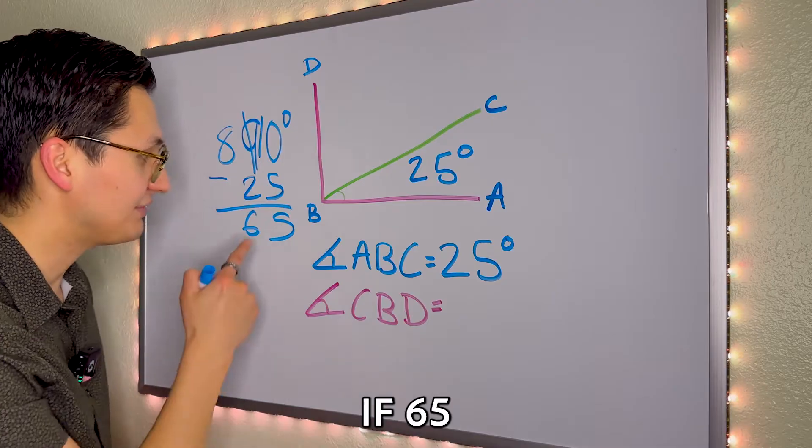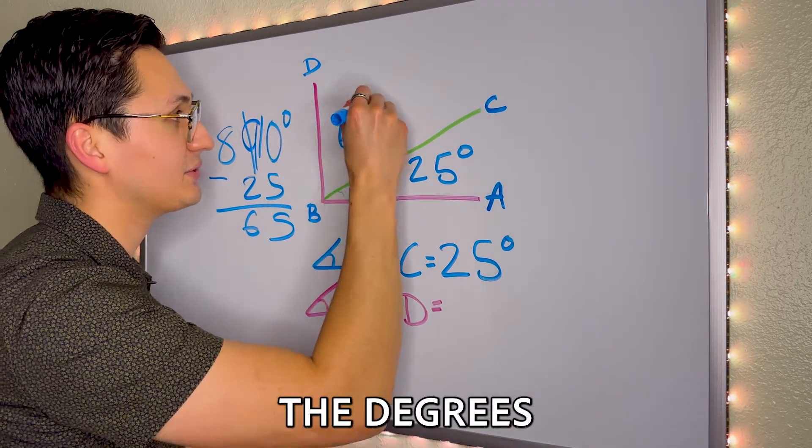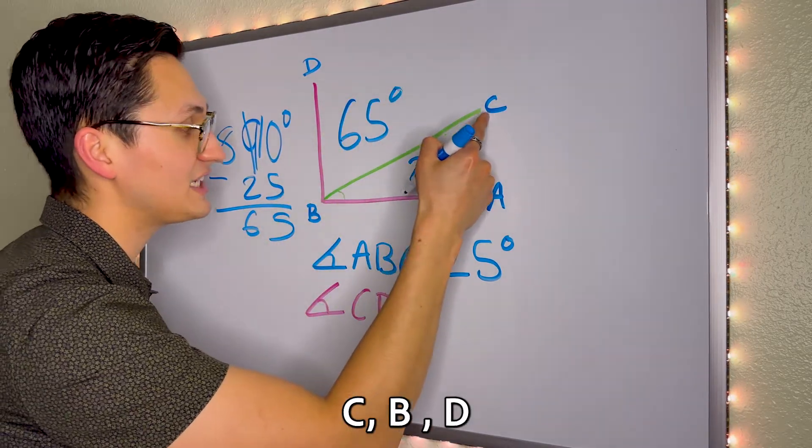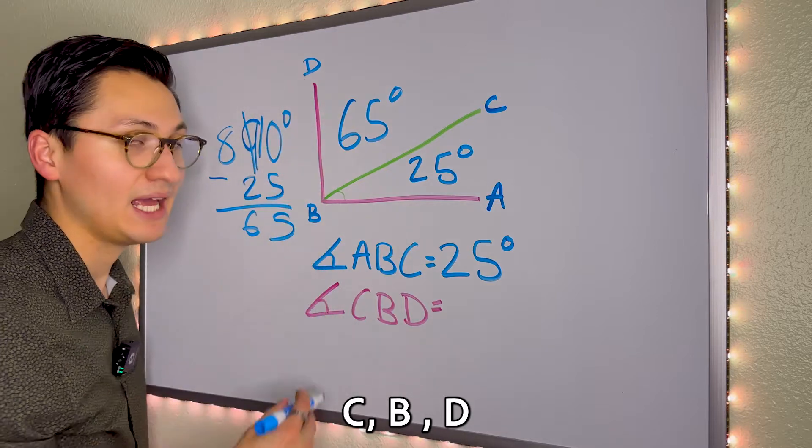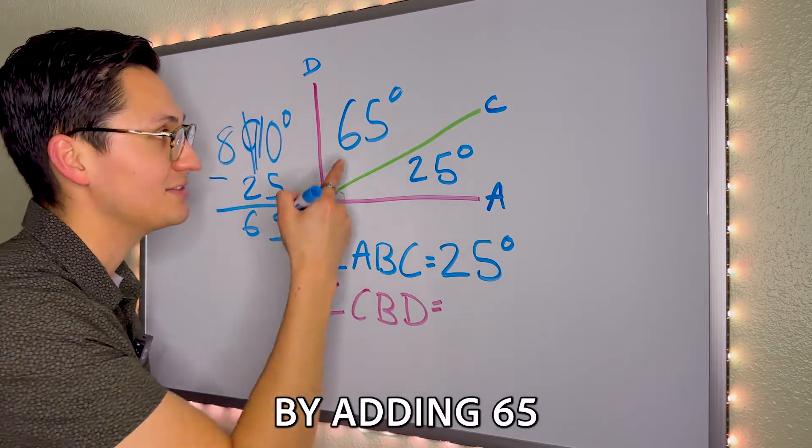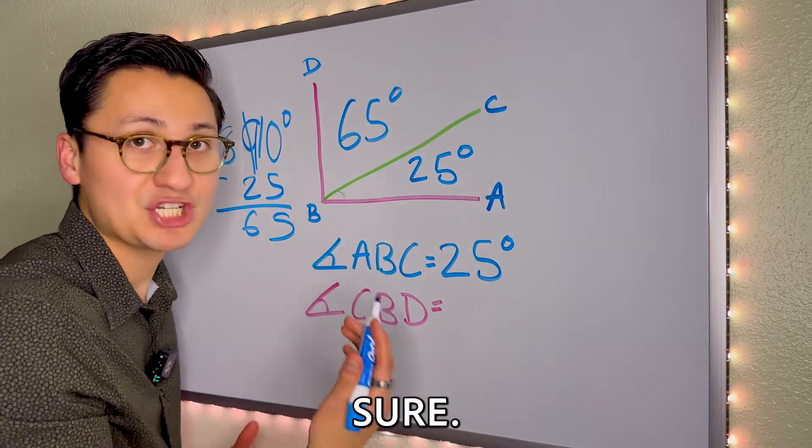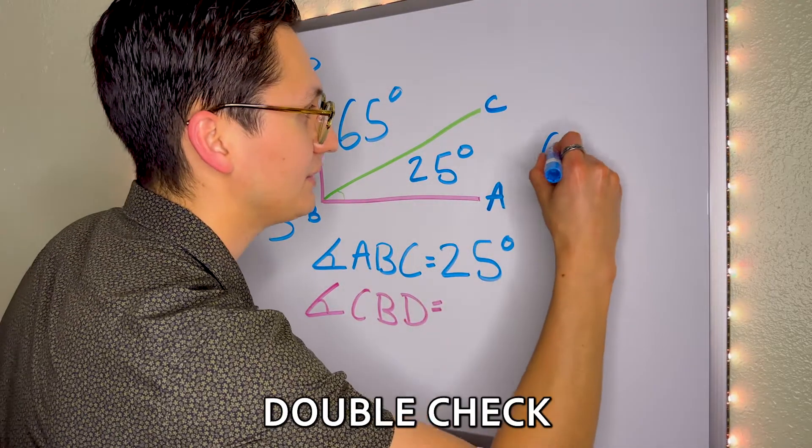So let's see if 65 is really the degrees of angle C, B, D. How would we check that? Well, by adding 65 plus 25 should give us 90. So let's double check.